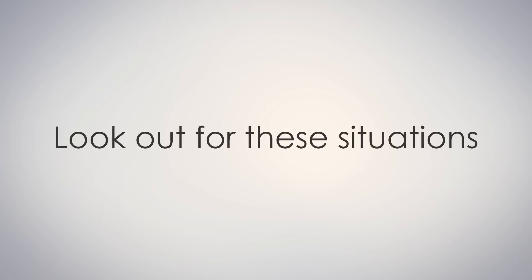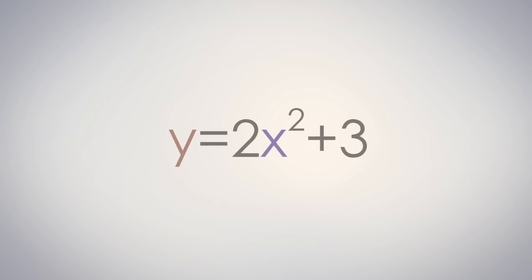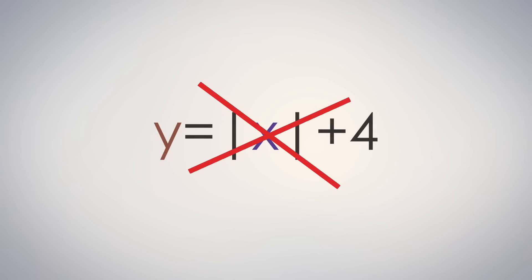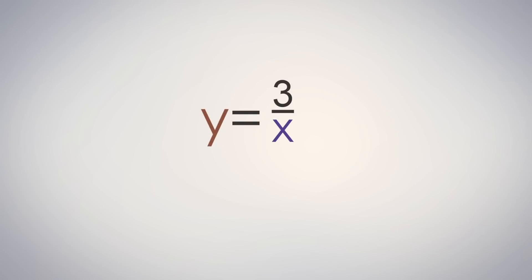Here are a few situations to look out for in a linear function. x cannot have an exponent other than the invisible 1. Also, x will never be trapped in a square root symbol. x will never appear in an absolute value symbol. And lastly, x will never appear in the denominator of a fraction. To put it simply, x can have a coefficient and a power of 1 as shown in the formula y equals mx plus b. But that's it. Now let's get back to linear functions.